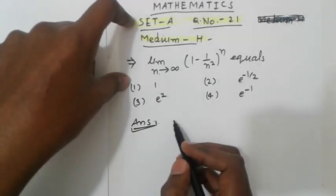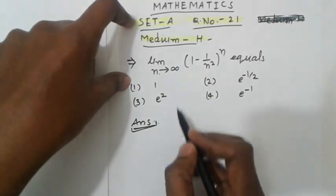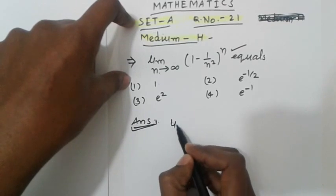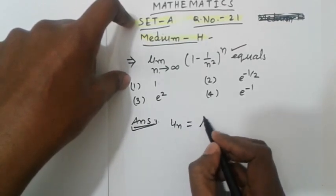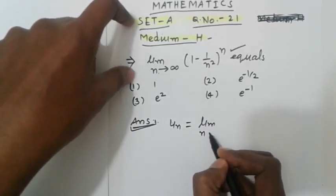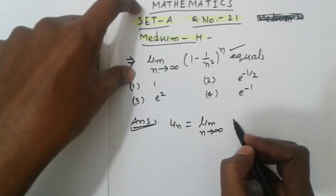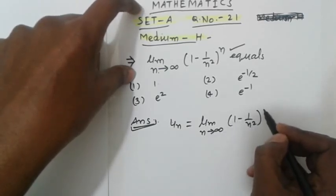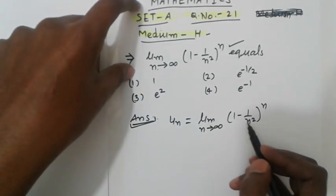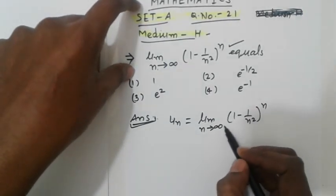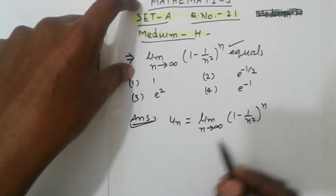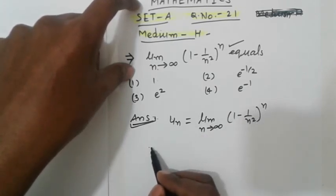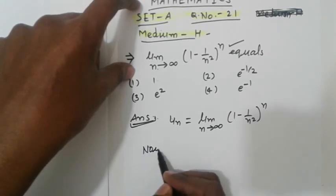Consider the given series. Let u_n equal the limit as n tends to infinity of (1 - 1/n²) raised to power n. The expression is raised to power n, so now using a very simple method.